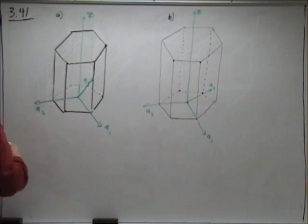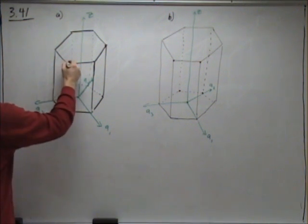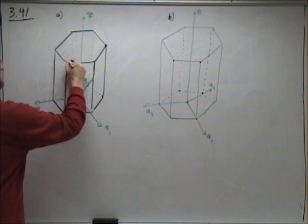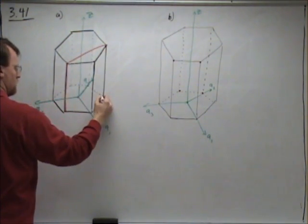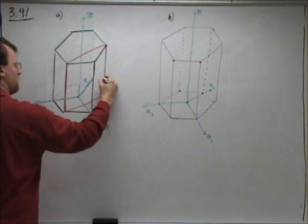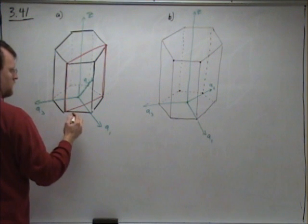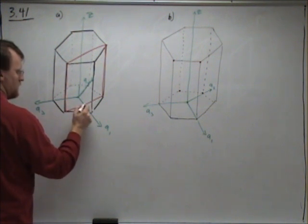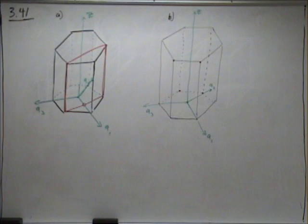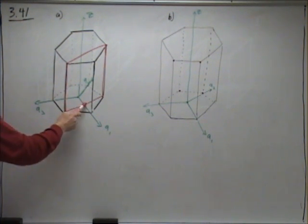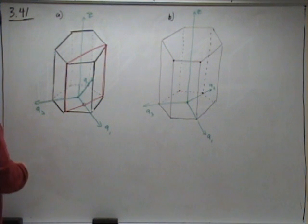So, for the first one, A, this is the plane we're looking for. Notice how, first up, looking for the intercepts, it crosses the A1 plane about halfway through. So this is 1 half for A1.